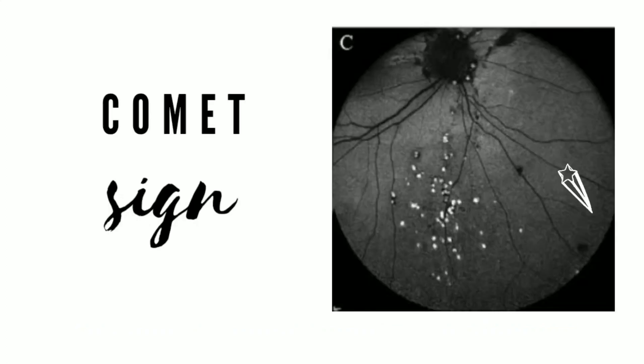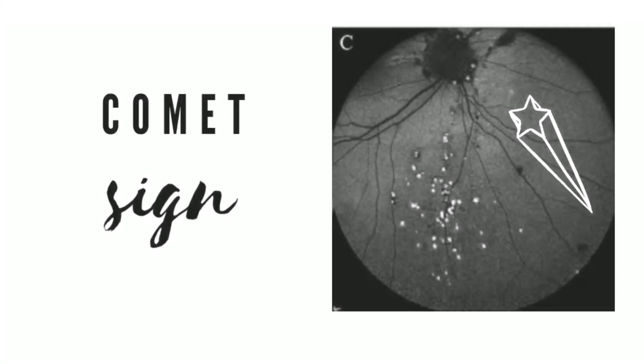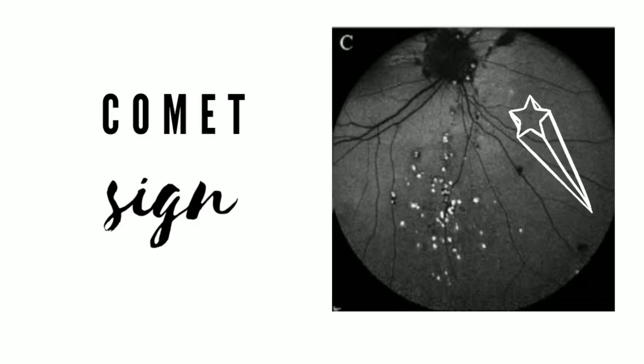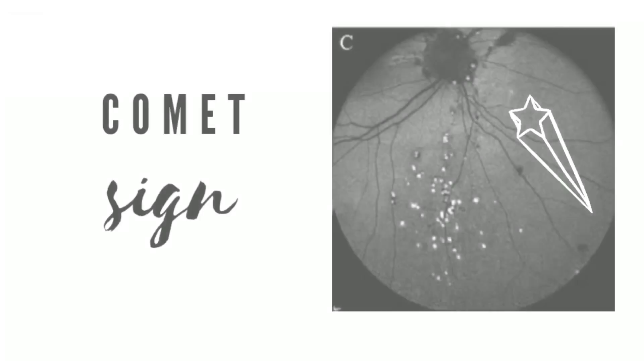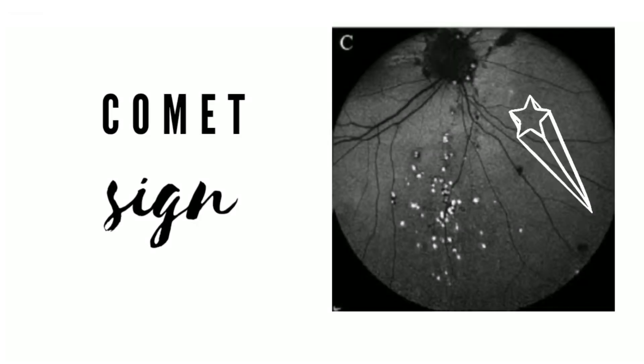The pathognomonic sign in pseudoxanthoma elasticum is the comet sign. It is called the comet sign because some of these whitish spots have tails pointing towards the optic disc. It's important to know the comet sign and the wing sign because both are part of the diagnostic criteria of pseudoxanthoma elasticum.